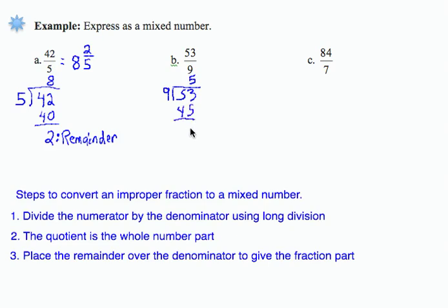5 times 9 is 45. If I subtract, I get 8. 8 is less than 9, so this is our remainder. I'm just going to write that as an r.